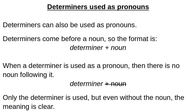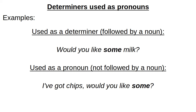Determiners come before a noun, so the format is determiner plus noun. However, when a determiner is used as a pronoun, there is no noun following it — the meaning is clear even without the noun. For example, 'would you like some milk?' — here 'some' is a determiner and 'milk' is the noun. But if used as a pronoun: 'I have got chips. Would you like some?' — here 'some' is used as a pronoun, not followed by a noun. As a determiner it is followed by a noun; as a pronoun it is not.